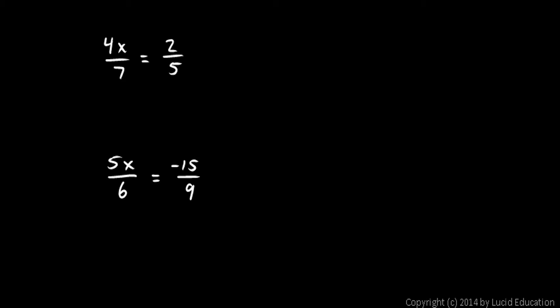Okay, here are the answers. 4x over 7 equals 2 fifths. I need to isolate the x. That means I need to get rid of this 4 and this 7, and I can do that in one step by multiplying the left side by 7 over 4. And that means I also have to multiply the right side by 7 over 4.